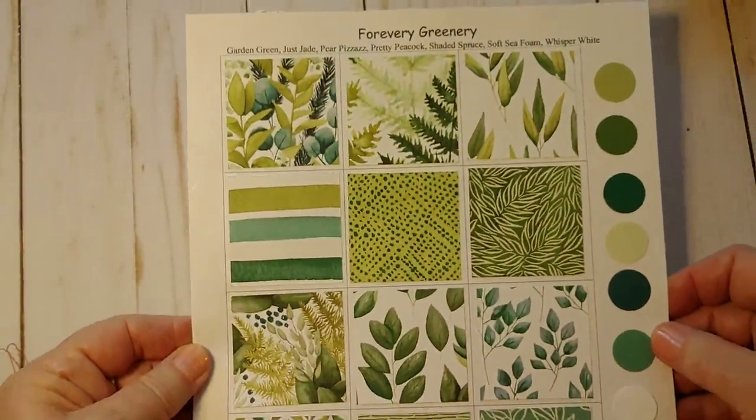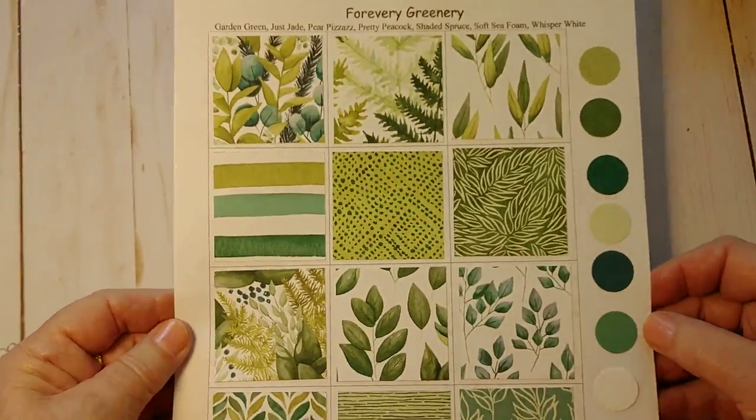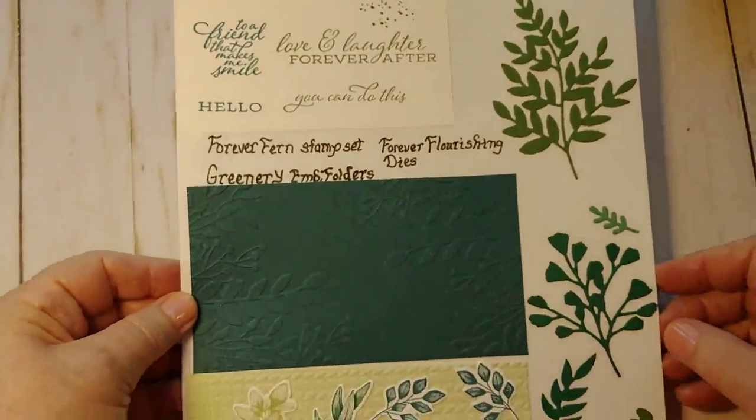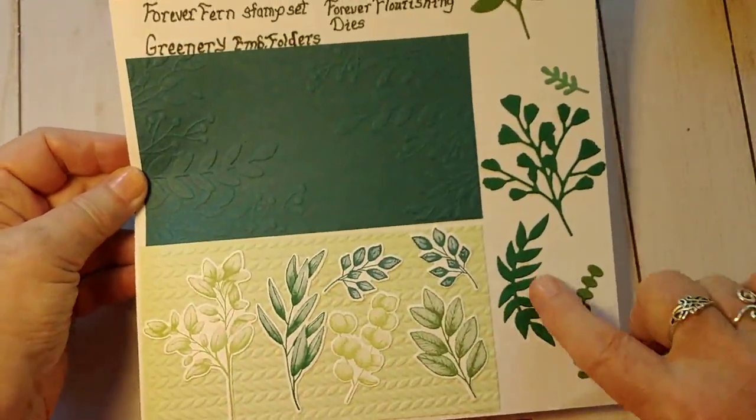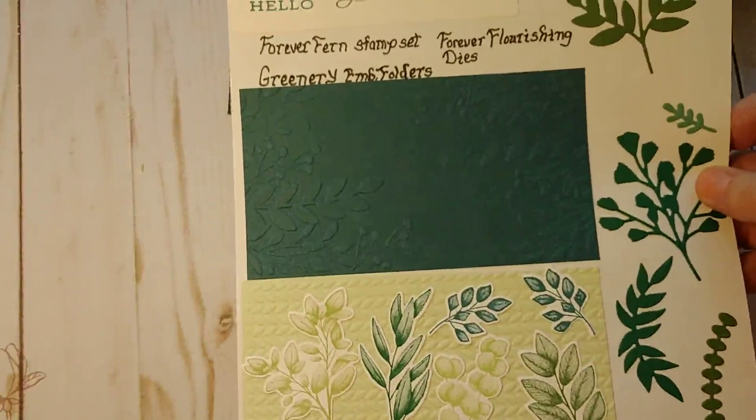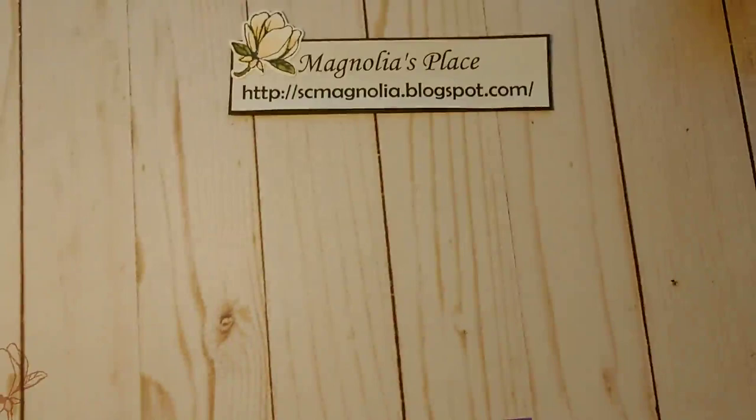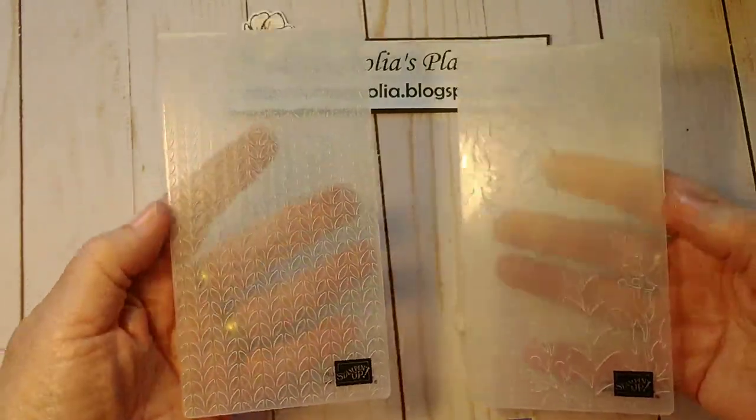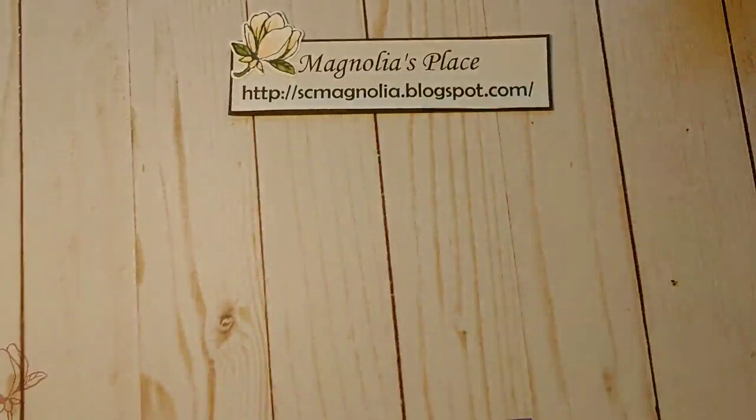But this is the new Forever Greenery Designer Series paper. Is this not the most gorgeous thing? Oh, when I saw it in the catalog, I swooned. And then, these are the stamped images. There are dies to cut those out, and then there are dies to cut out these as well. Beautiful greetings. And two new embossing folders also go with this suite of products. And these embossing folders are a little different. They're not a full size. They're a little bit bigger than half size. And you get both in the set. I have found this to be great fun.